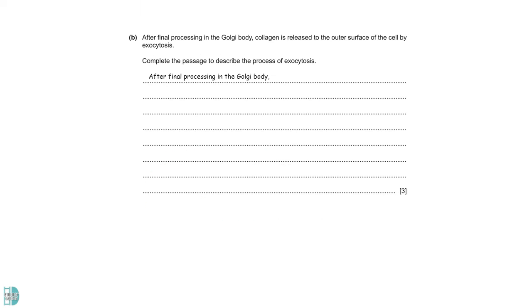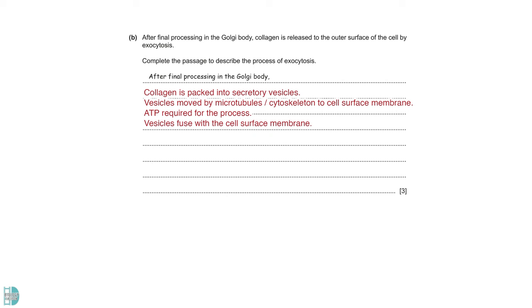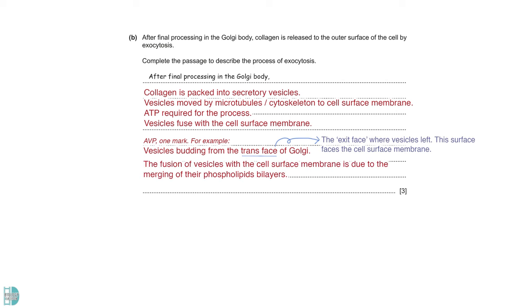Part B asks you to describe the process of exocytosis. After a protein is being processed in Golgi, it will be packed into secretory vesicles. Then, the vesicles move by microtubules or cytoskeleton to the cell surface membrane. ATP is required in this process. The vesicles will then fuse with the cell surface membrane. There is one mark for AVP. For example, the budding of vesicles from Golgi occurs on its trans phase and the fusion of vesicles with the cell surface membrane is due to the merging of their phospholipid bilayers.